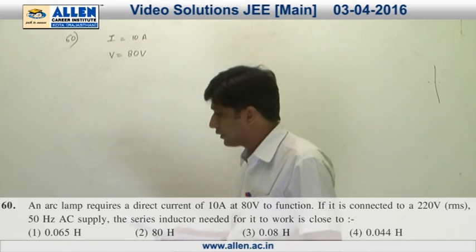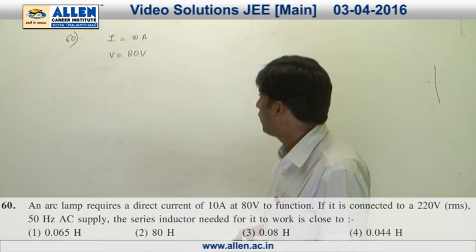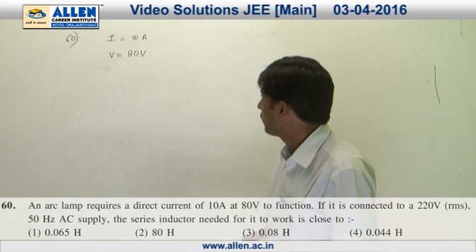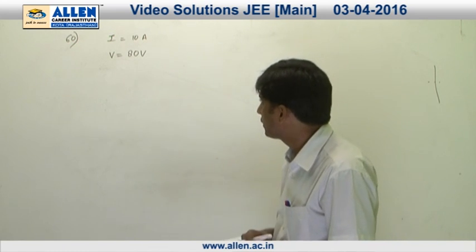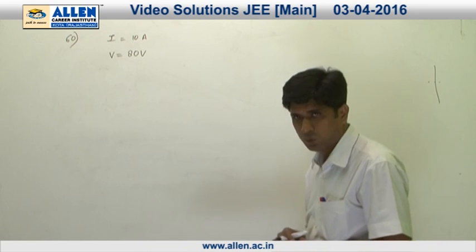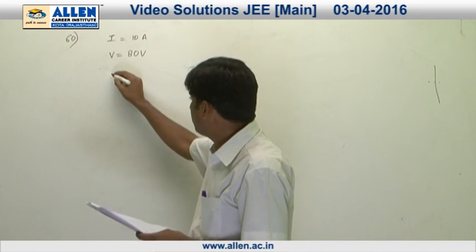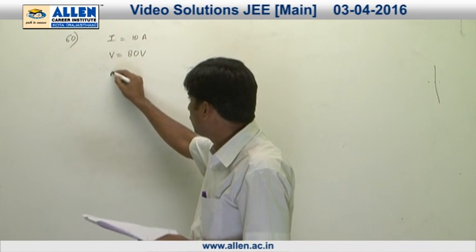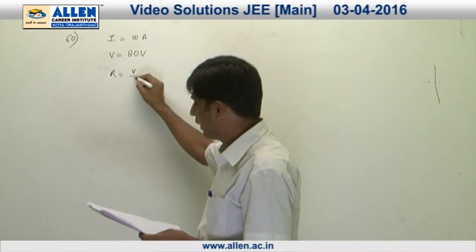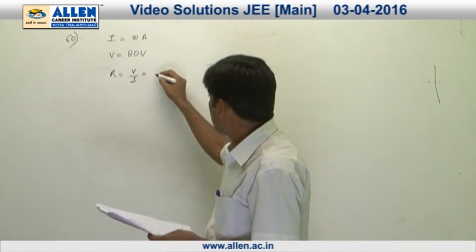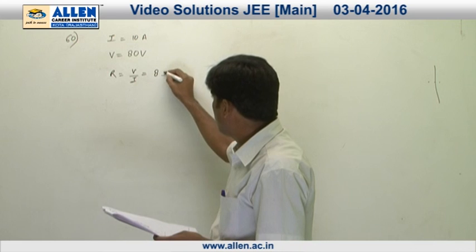In question number 60, first of all, we calculate the value of resistance from the given data — that is current and voltage — in the first case. Applying Ohm's law, R = V/I, we get the value of resistance as 8 Ohm.